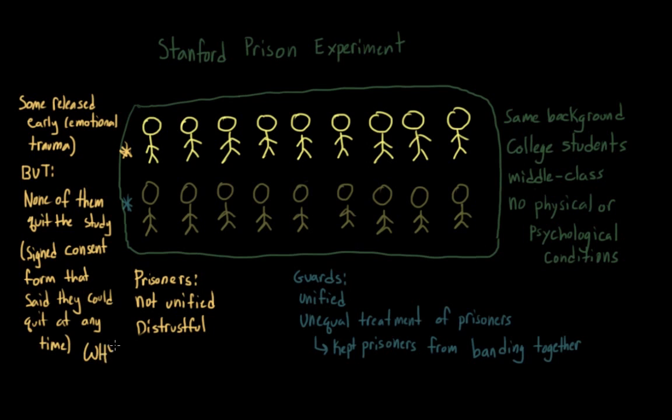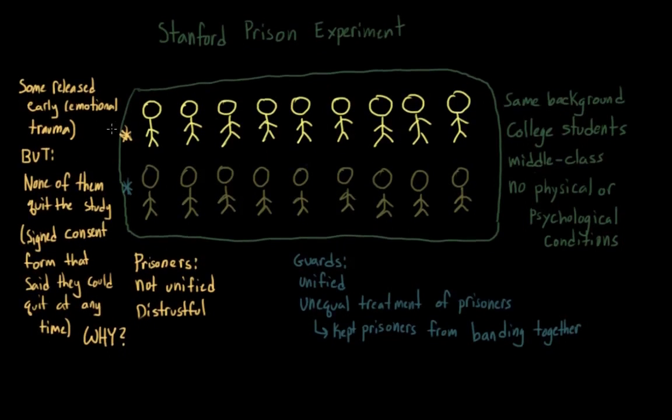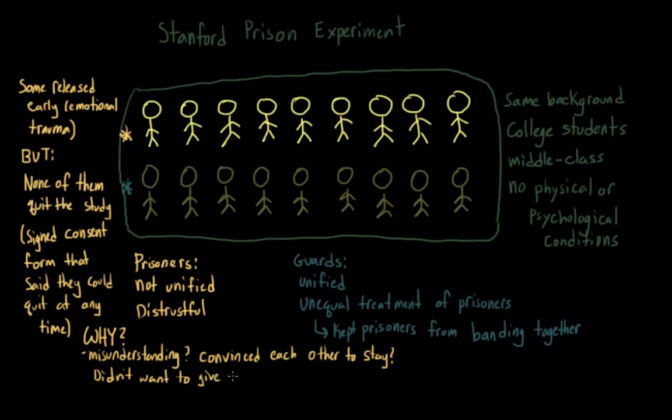And this always really confused me. It's possible that maybe some of them misunderstood and didn't think that they could leave. Maybe they somehow convinced each other to stay. Or maybe they knew that they could leave, but they didn't want to forfeit any of the money that they were going to get for the experiment. It really isn't clear. But I just want to point out that while these participants were being treated like prisoners, they were not actually prisoners. They were volunteers who could have left at any point.